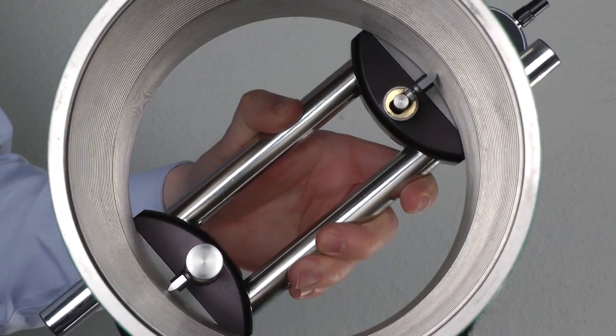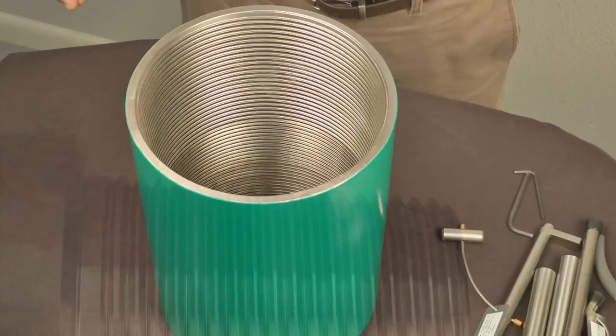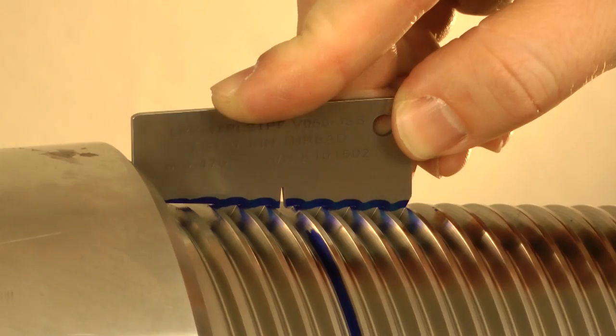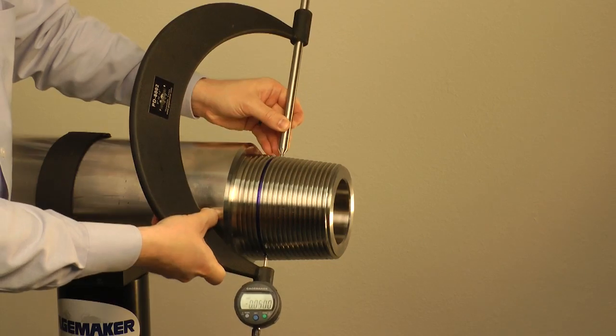Whether you call it ball PD, root diameter, or crest diameter, pitch diameter is a critical thread inspection element. Pitch diameter governs the strength of the actual threaded assembly. Monitoring PD with GaugeMaker optimizes thread engagement, enabling the connection to perform as designed.